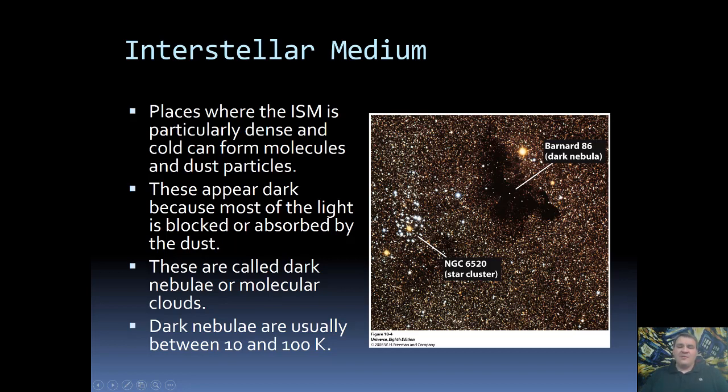There was actually a period in time where some people thought that some of these dark nebulae was actually just a hole in the stars. A region where there just weren't any stars. That is, in fact, not the case. It's that there's a big cloud of stuff right there blocking the light. Now, dark nebulae can be between 10 and 100 Kelvin. Now, remember what Kelvin is. This is the temperature scale that we like to use in astronomy. Where 0 Kelvin is the coldest that anything can be. So, this is between 10 and 100 above absolute 0. So, these are really, really cold.